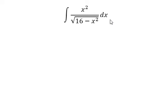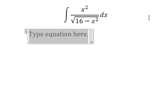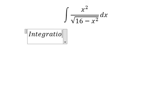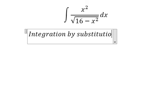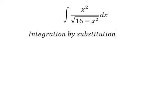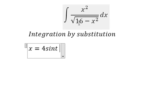So I will show the technique how to answer the question. We will use integration by substitution. In this situation, we put x equals 4 sine t because we want to get 1 minus sine squared t so that they can destroy the square root.